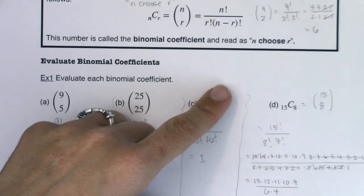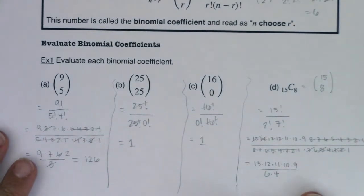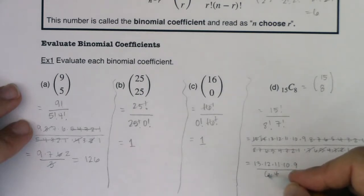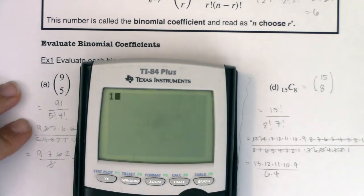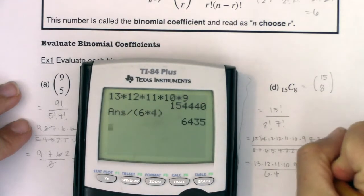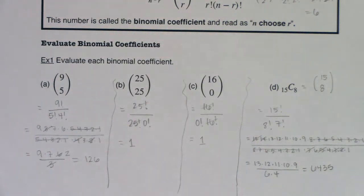I can continue canceling — the 4 breaks into two 2's canceling with 12 and 10, and the 6 breaks down further — but I'll just use my calculator. Plugging in 13×12×11×10×9 divided by (6×4) gives 6,435. I'll hop over to the computer now to show you how to find the binomial coefficient on your calculator.